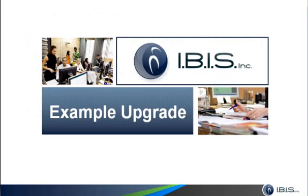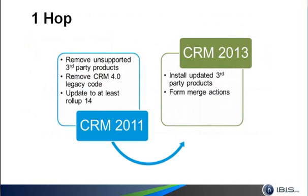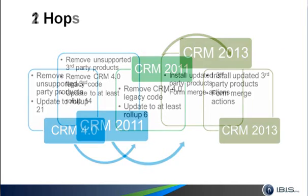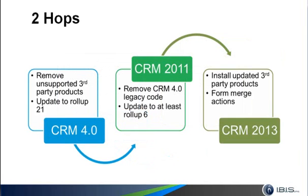With those tasks covered, let's look at an example upgrade. Consider going from 2011 to 2013 — in 2011 you remove any unsupported third-party products, or install their updated versions, remove your 4.0 code, and update to Rollup 14. Then after the upgrade, you merge your forms. If coming from CRM 4.0 to 2013, remove third-party products from 4.0 and update it to rollup 21. Then in the interim hop through 2011, you can remove any 4.0 legacy code, since 2011 and 2013 have a similar customization model with plugins and solutions — CRM 4.0 had no solution model. In 2011 you can identify the legacy code using the tools mentioned and remove it before upgrading to 2013.